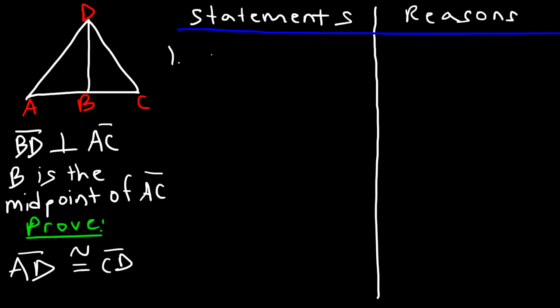Let's start with number one. We're given that BD is perpendicular to AC, and let's write 'given'. What conclusions can we draw from that statement? If BD is perpendicular to AC, what do we know?